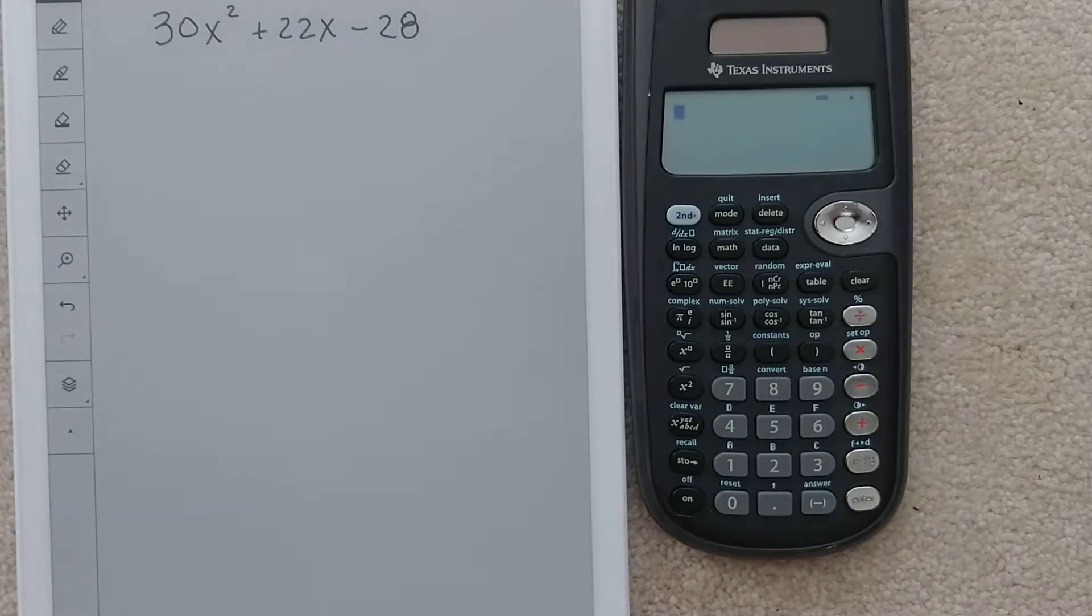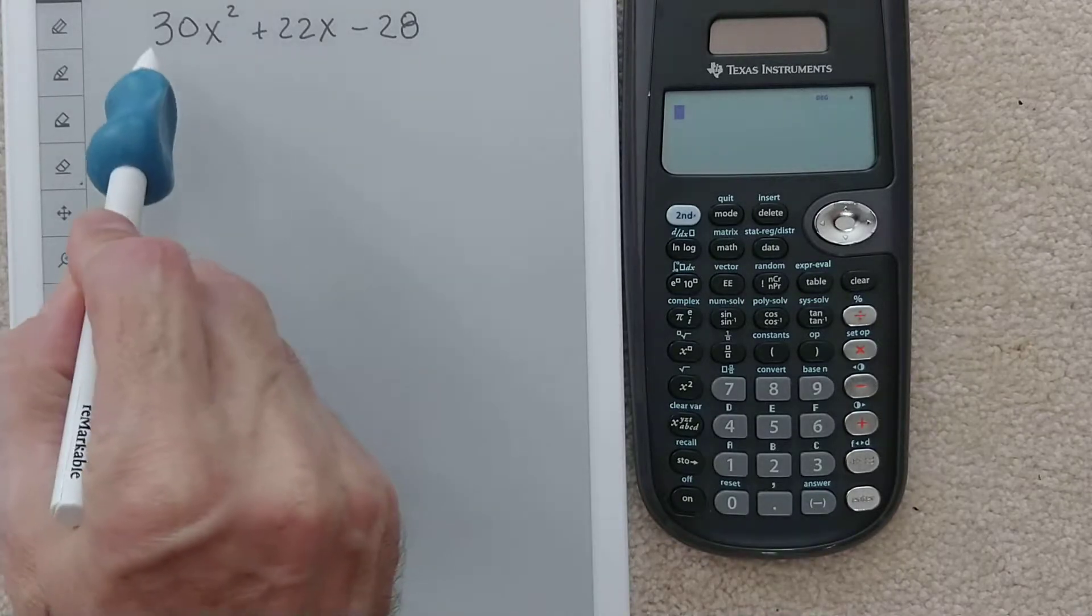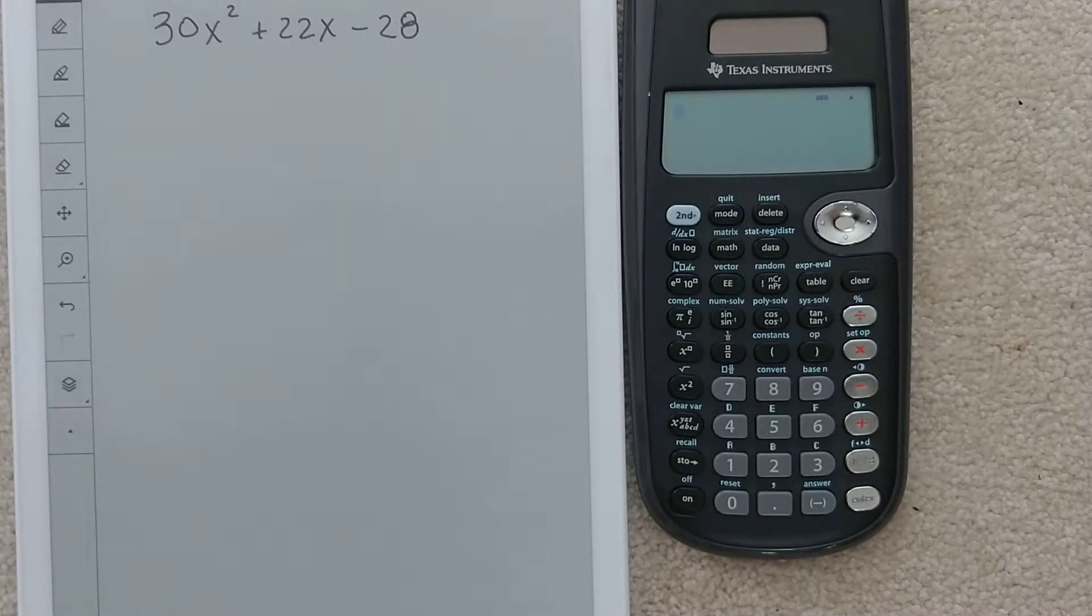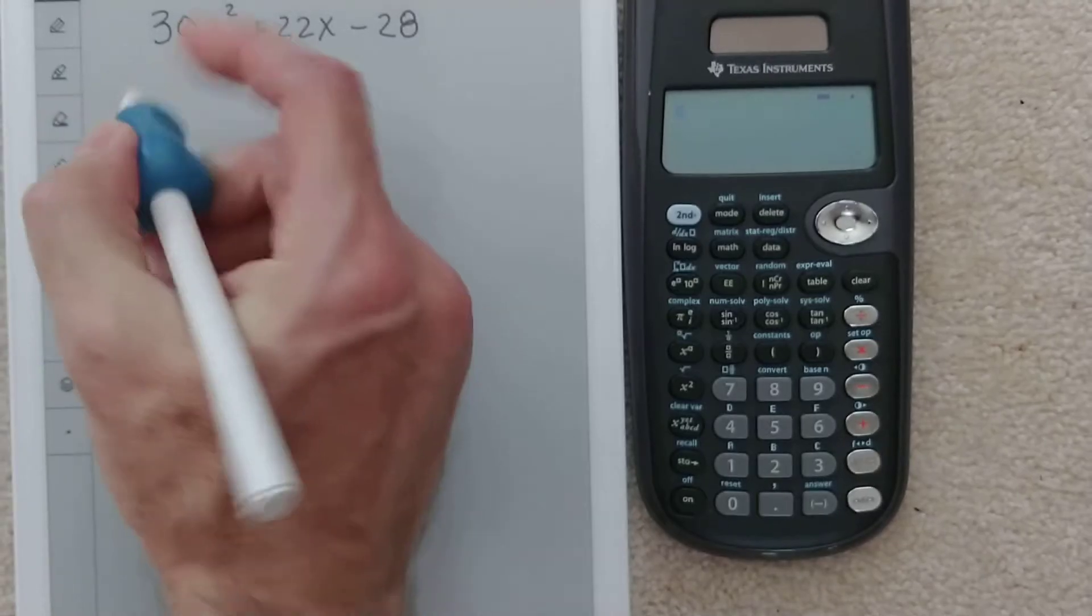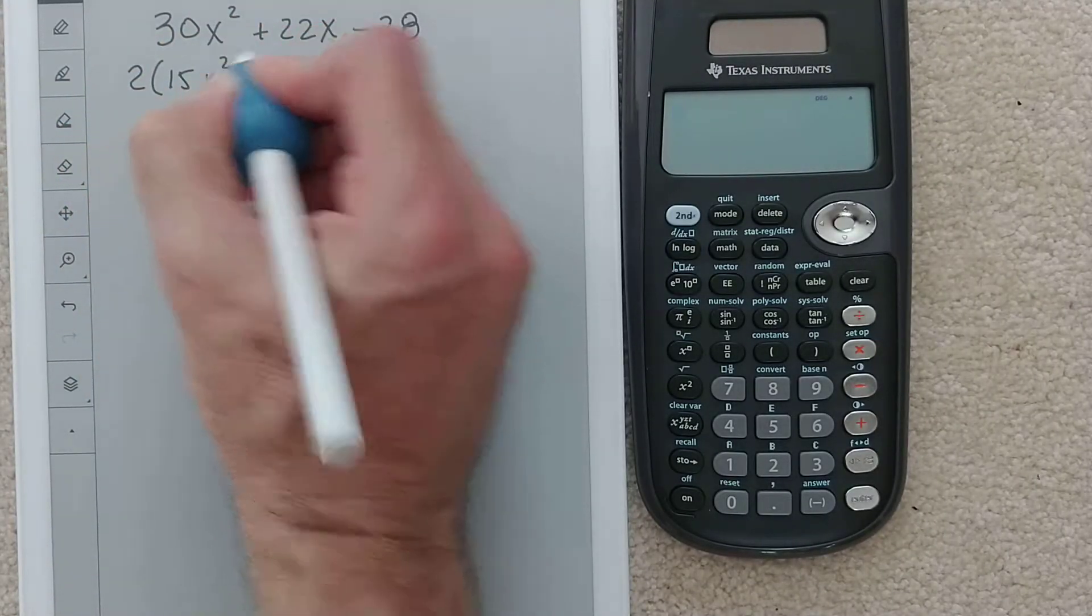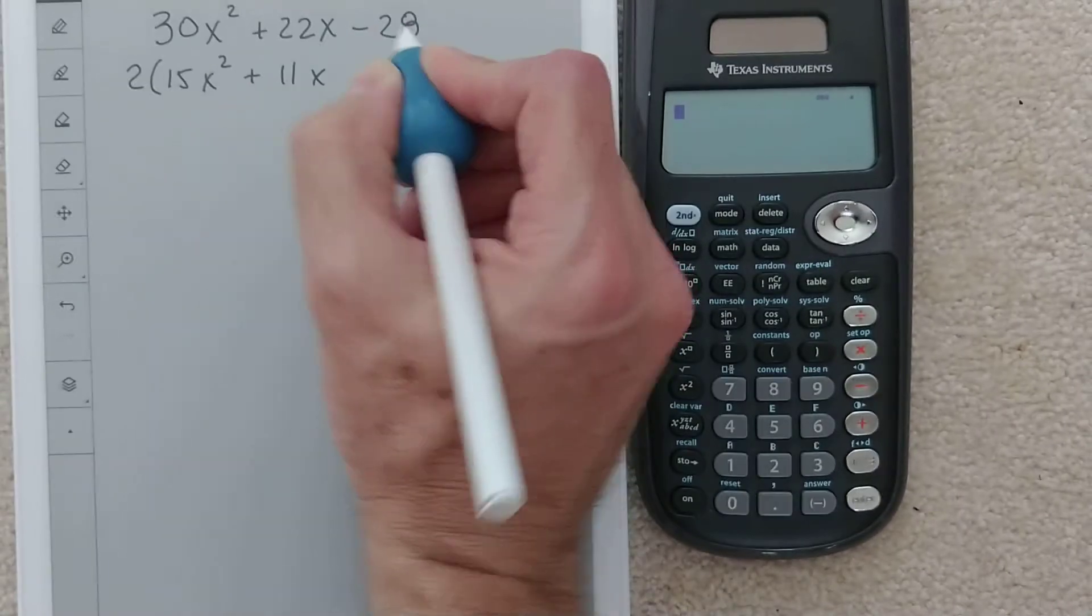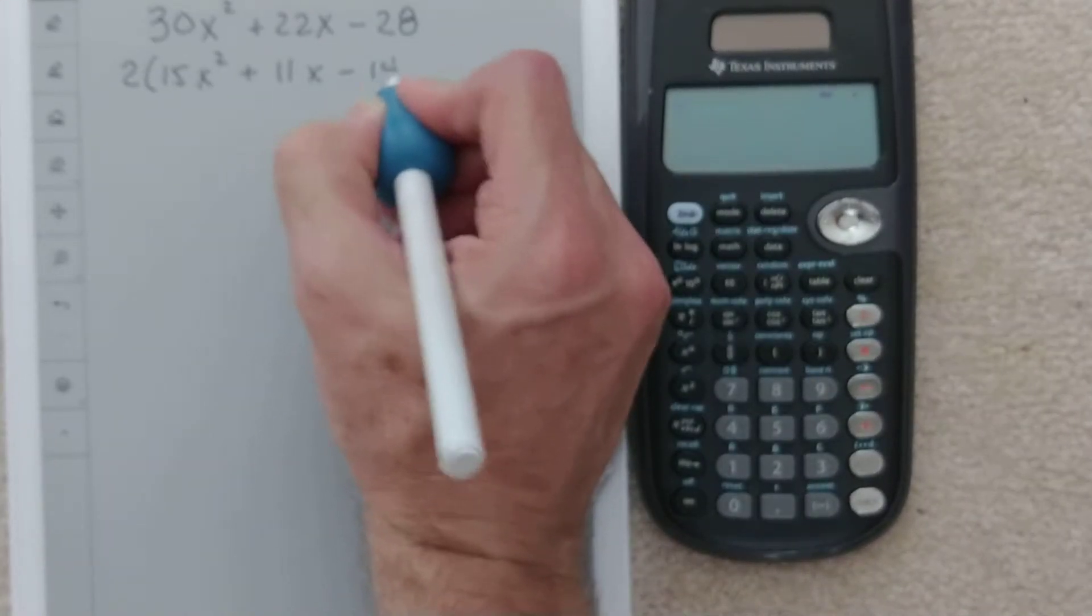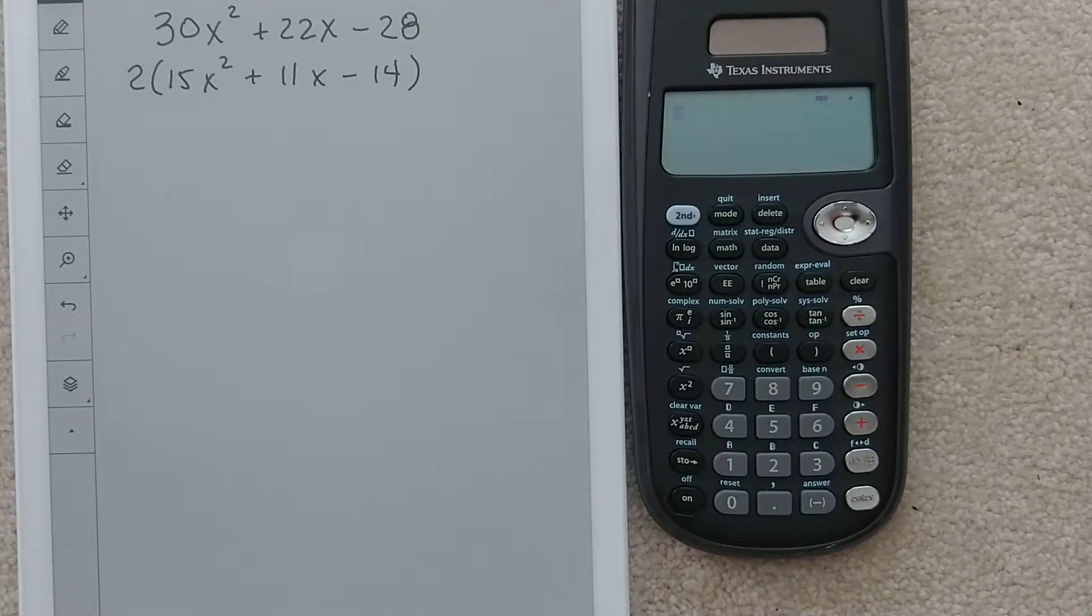Alright, let's try a more difficult factoring problem. We're going to start with best practice of factoring out anything we can. These are all even numbers, so I'm going to take a 2 out. That gives us 2 times 15x squared plus 11x, and that's all we can do there, minus 14.